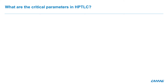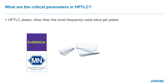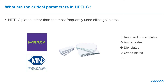The first parameter is the plate. From the plate, you have different suppliers such as Merck or Macherey-Nagel, for example. Then you have different types of plates, for example the reverse phase plate, the amino plate, the diol plate or the cyano plate.